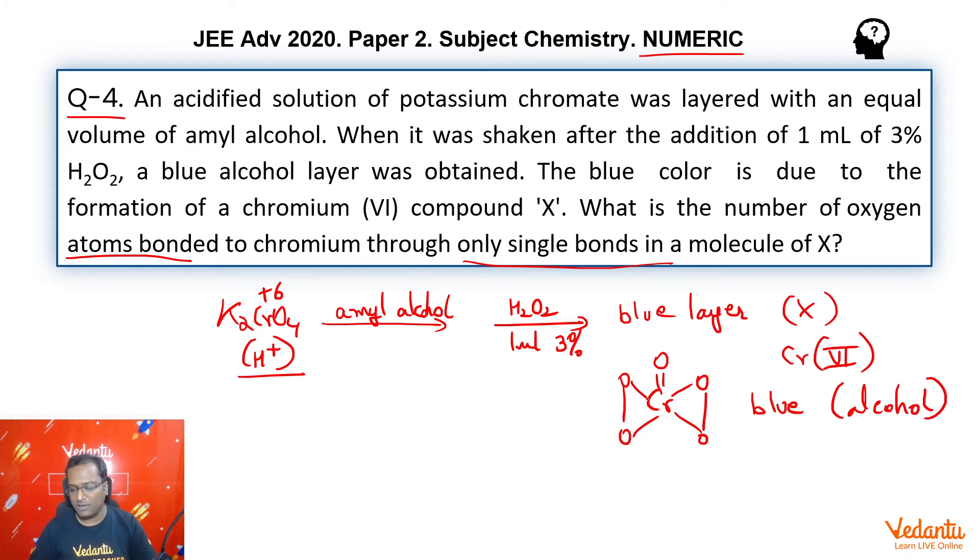Now, here as you can see, there are 6 oxygen bonds, so plus 6 oxidation state. Overall single bonds present are 4, so our answer is 4. How many oxygen atoms bonded to chromium through single bonds? Answer is 4.